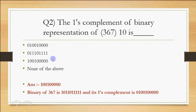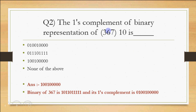The result matches option number 3. The extra leading 0 doesn't matter — leading zeros on the left are insignificant — but trailing zeros on the right do matter. So option number 3 is the correct answer. First convert to binary, then take the 1's complement, then check the given options.